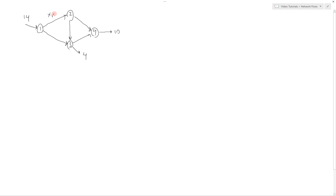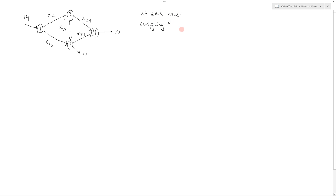We'll denote these by their numbers: x12 going from 1 to 2, x24, x13, x34, x23 going from 2 to 3, and x34. So we've labeled all of our paths. Now we can write out an equation at each node by balancing the outgoing and the incoming values.